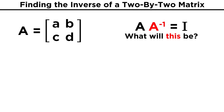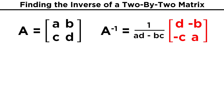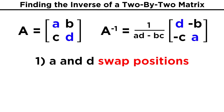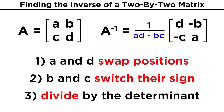Now we know how to perform matrix multiplication, so how exactly can we structure an inverse matrix so as to get an identity matrix when multiplying by the original matrix? Let's start with a simple two by two matrix with entries A, B, C, and D. The inverse of this matrix will be one over the determinant of this matrix, times a new matrix with entries D, negative B, negative C, A. So A and D have swapped positions, B and C have gone from positive to negative, and the resulting matrix is being divided by the determinant of the original matrix.